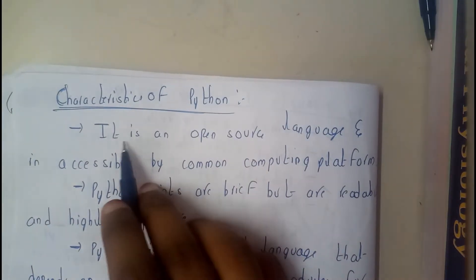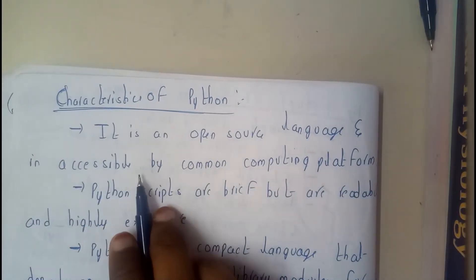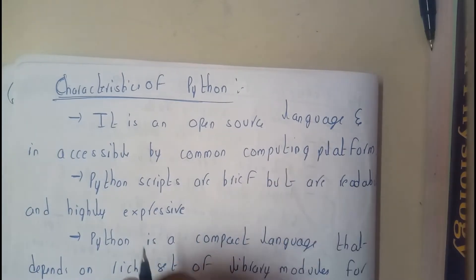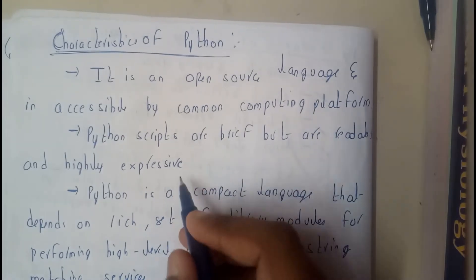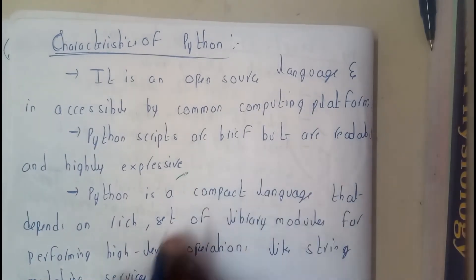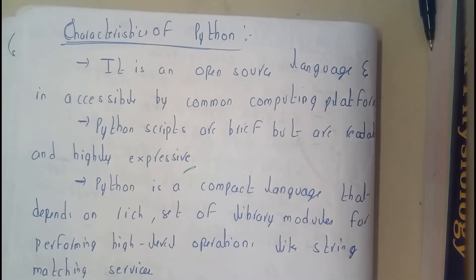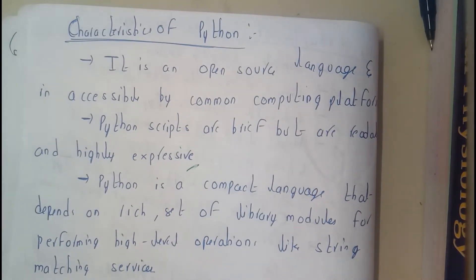Python is an open source language, accessible by common computing platforms. Python scripts are brief but readable. Reading and programming in Python is really easy when we compare it with other languages, because Python has very rich libraries and there are many predefined programs — we can use them directly.